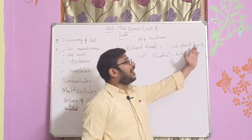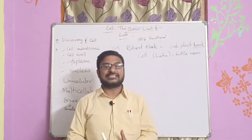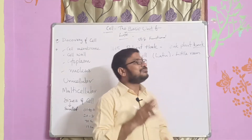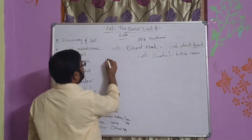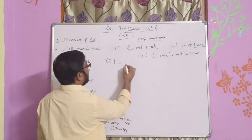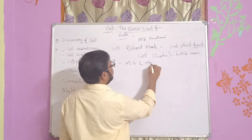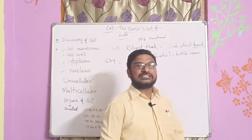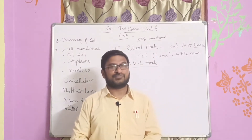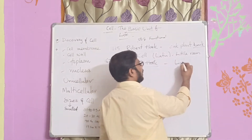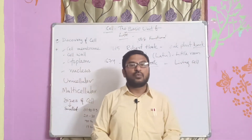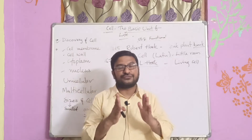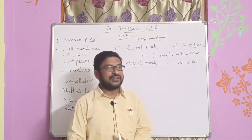The oak plant bark cells are obviously dead cells, so the first dead cell was observed by Robert Hooke. After a few years, in the year 1674, a scientist called Antony van Leeuwenhoek noticed living cells — like bacterial cells — for the first time. So the first living cell was observed by Antony van Leeuwenhoek in 1674.